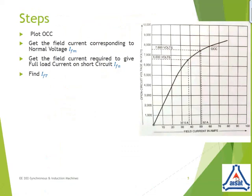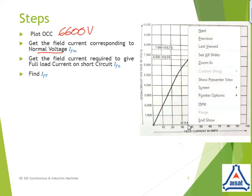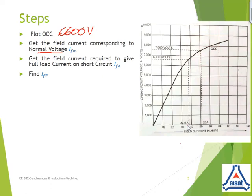Now, we will get into the numerical steps. The very first thing is, after the plot of OCC, you need to get the field current which corresponds to the normal voltage. Because, here it is normal voltage. Why? Because, it is given in the question that you need to find the full load voltage regulation. The field current which corresponds to this normal voltage is denoted by the letter IFM. And IFM value over here is, the normal voltage from the question is nothing but 6600 volt. Corresponding to that 6600 volt, what is the field current corresponding to that? It is coming over here and it reads as 37.5 ampere. That is the first data we are getting, IFM as 37.5 amps.